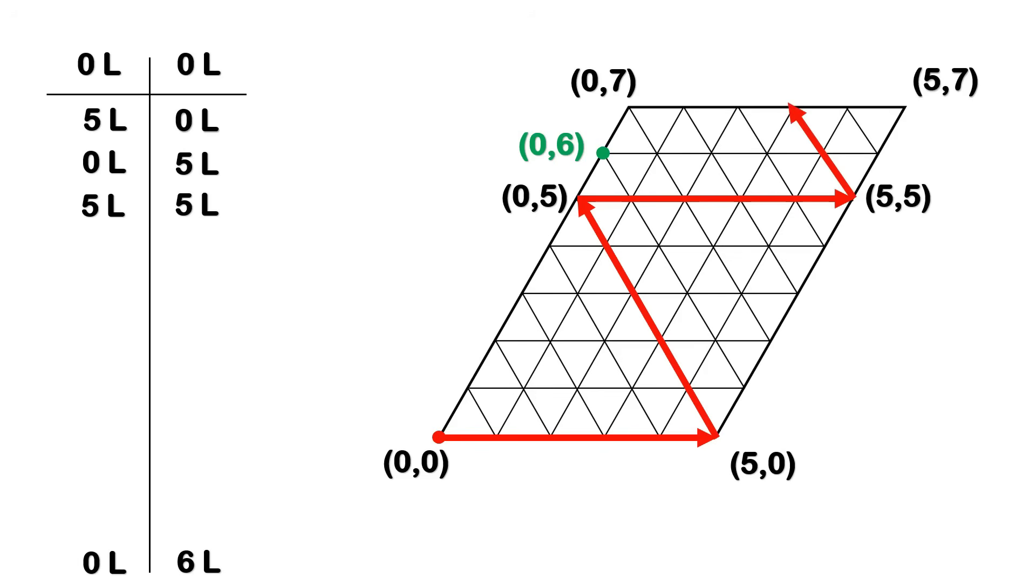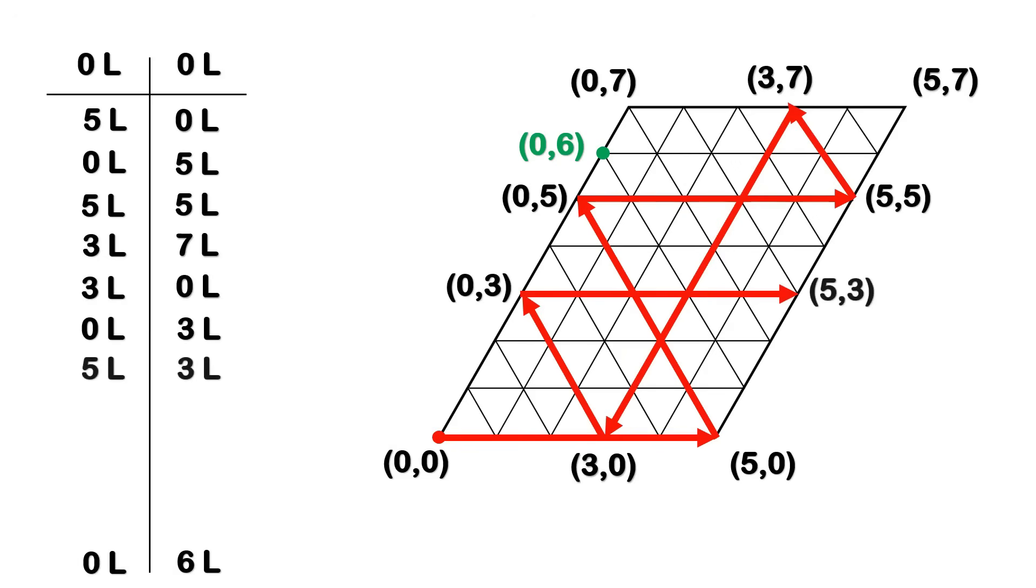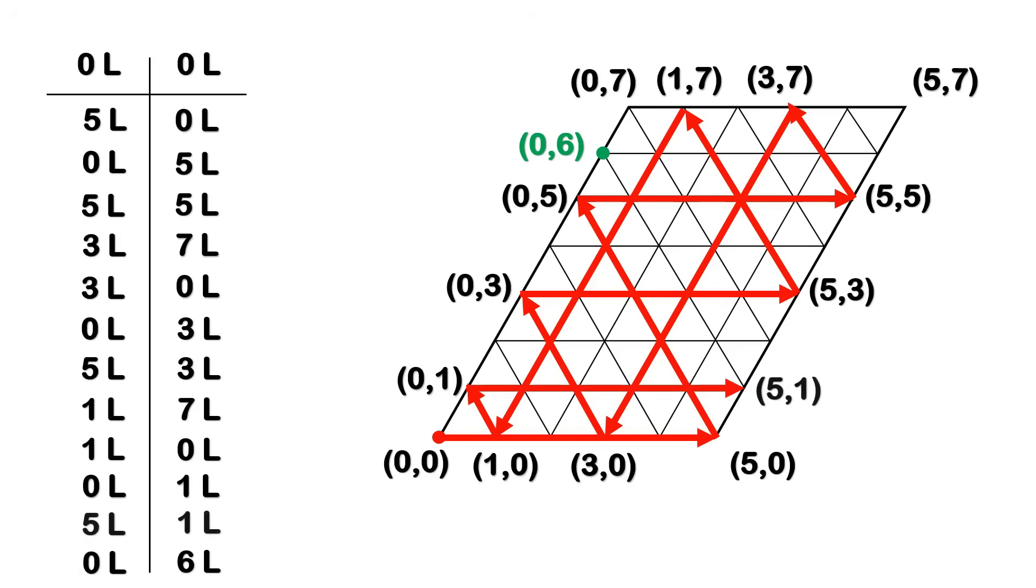With the next reflection, we arrive at (3,7). From there, we move to (3,0). Then we reach (0,3). The next reflection takes us to (5,3). We keep going like this until we eventually reach the point (5,1). And as the final move, using the green vector, we land exactly on the point (0,6). And that's it.